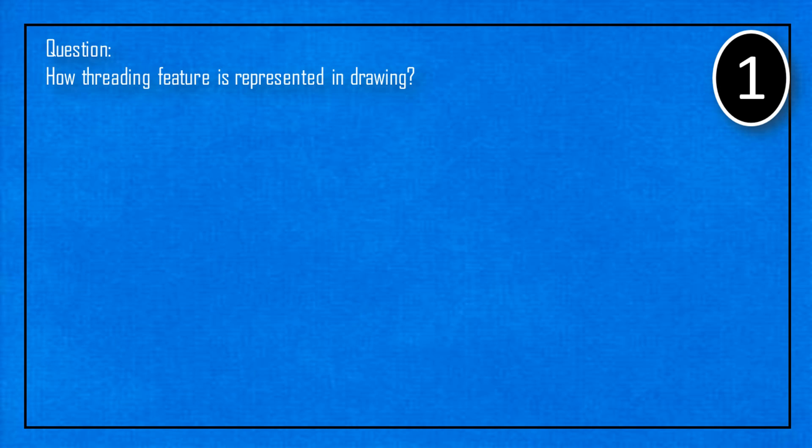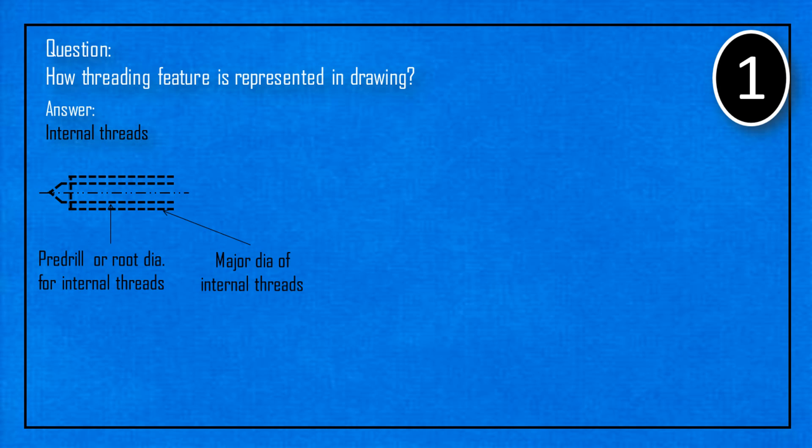How is threading feature represented in the drawing? This is how pre-drill or minor diameter of internal threads is shown. And this is the major diameter of internal threads.